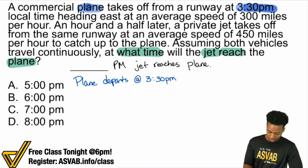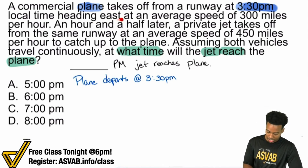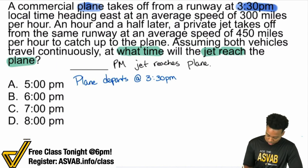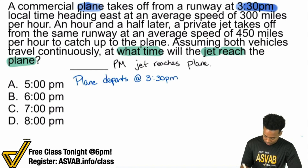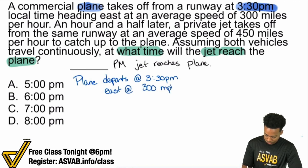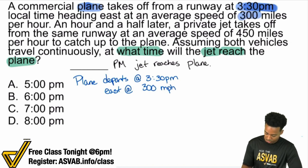The problem says 3:30 PM local time, headed east at an average speed of 300 miles per hour. So: departs at 3:30 PM, goes east at 300 miles per hour. I'll go ahead and highlight that information.